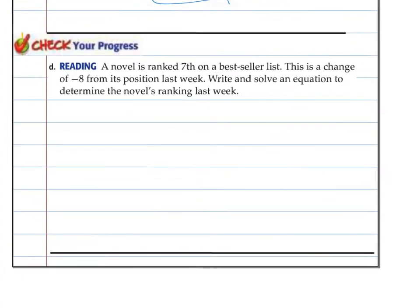Another word problem? You can try it, pause and come back. A novel is ranked 7th on the best seller list. This is a change of negative 8 from its position last week. Write and solve an equation to determine the novel's ranking last week. I saw the word is. This, they were talking about this same thing. So it said, 7 is a negative 8 change from the position last week.